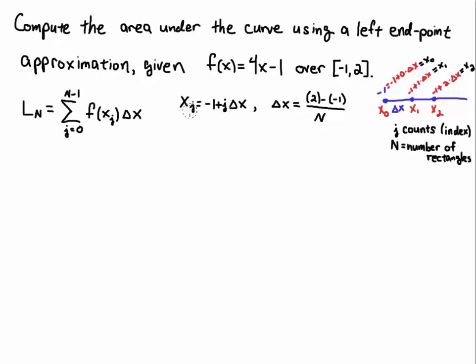Now the grid points, x sub j, you start at the left endpoint, which is minus 1 in this case. So we start here at minus 1 and then you add a delta x for each j. So in other words, if you look at this picture here, we're starting at minus 1 and then we're adding the width of delta x to get to the next endpoint. But for the first endpoint, that is j is 0, so the first grid point is x sub 0 or x naught in this case.